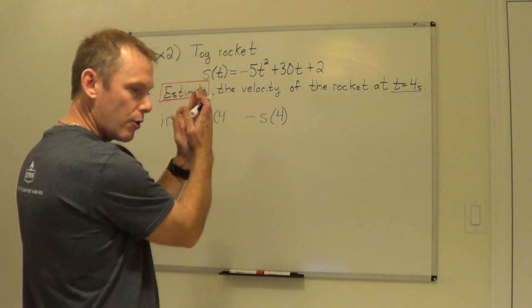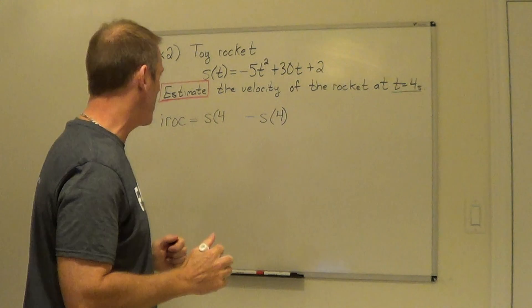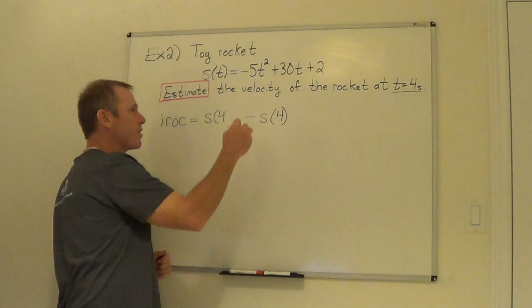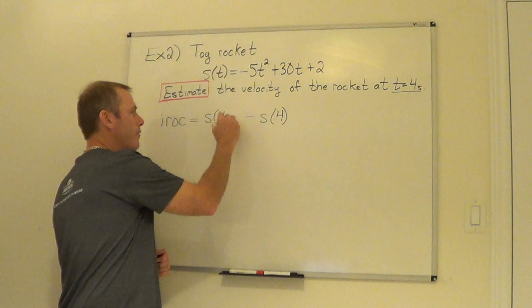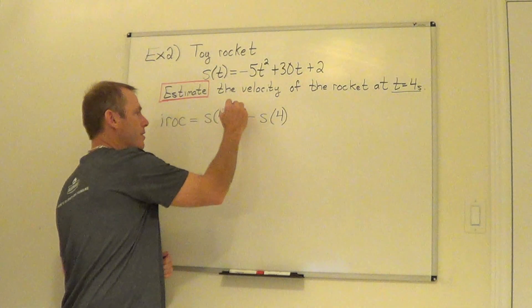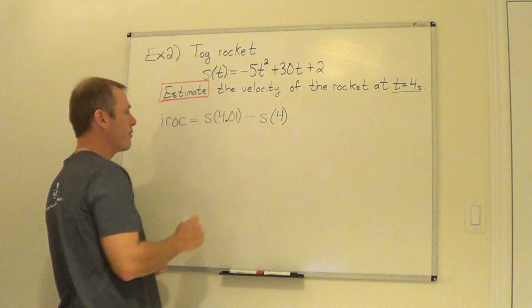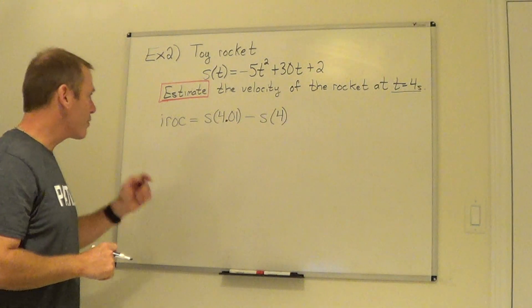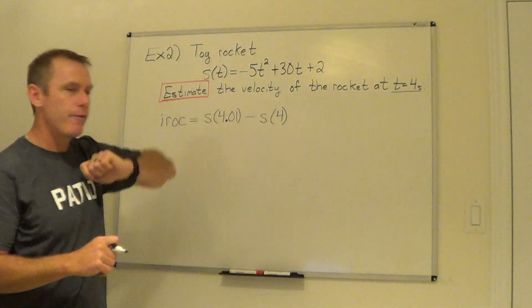It's that h value that we're moving so close together they look like 1, but here we're just going to estimate and you have to go into the hundreds, so I'm going to find s of 4.01, 1 hundredth bigger than 4.